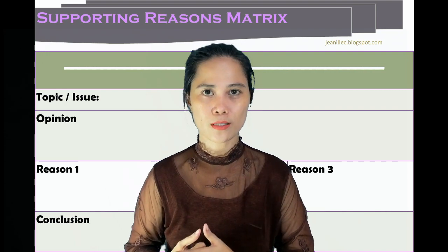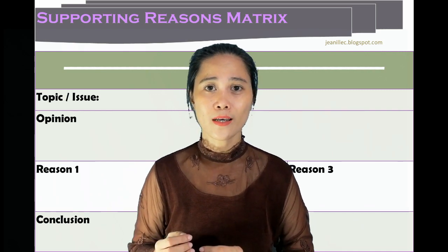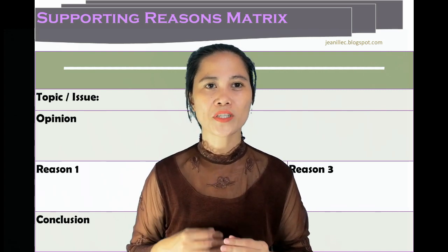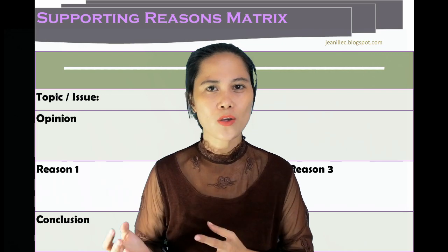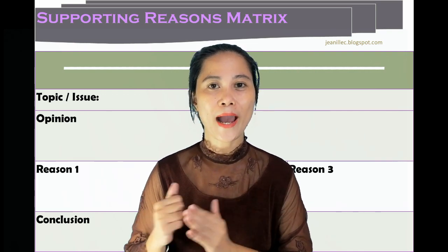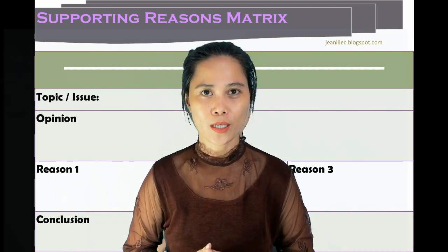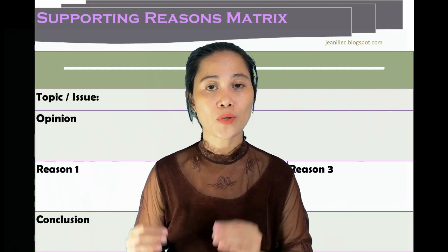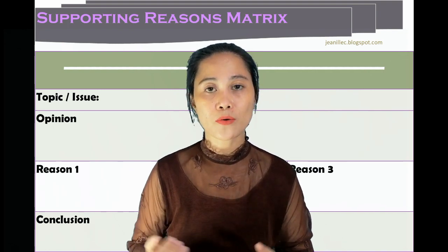This is called the Supporting Reasons Matrix. Why reasons? It is because it is always easy to formulate opinions — it is always easy to say something — but it's always difficult to prove it, to prove why you think so. It's difficult to prove your arguments. So you have to lay them out. We plan them so that when you're going to be writing, you're doing it in an organized manner. Because you are plotting your reasons in this matrix, it would be easy to see if your reasons are interrelated, or if one is a repetition of another, or if there is redundancy, or if you're beating around the bush.